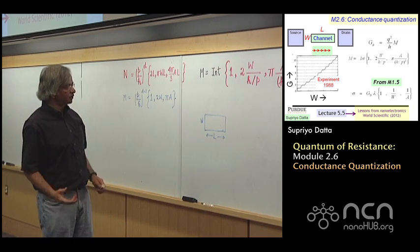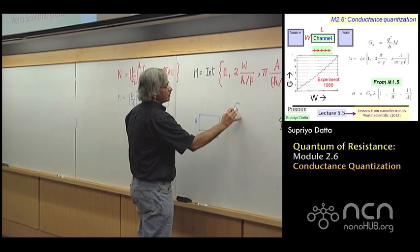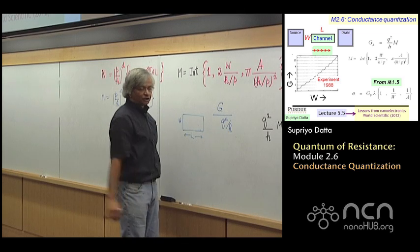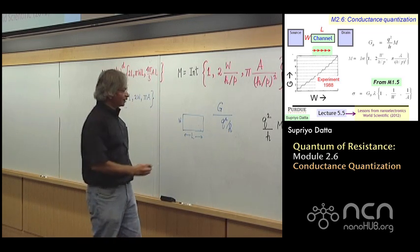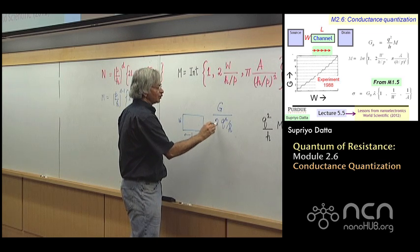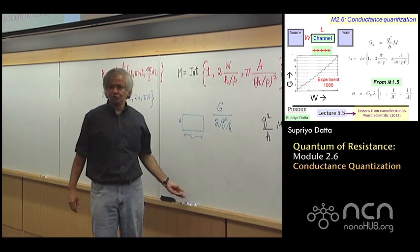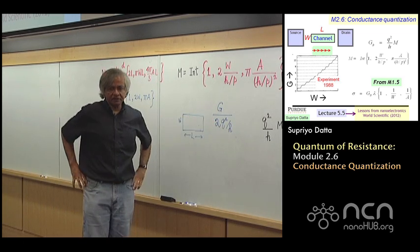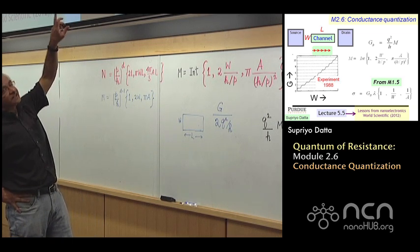Normalized in the sense that what is plotted there is this conductance divided by Q squared over H. Actually, what's plotted is not conductance over Q squared over H, but divided by 2Q squared over H, and this 2 has to do with the two spins, which I'll come to in a minute, but this conductance is plotted, this normalized conductance, and what you see is it goes in steps.